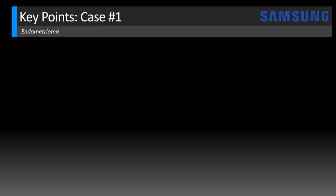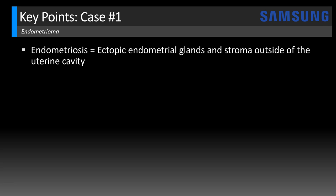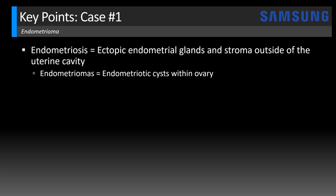Let's review key points for case number one. Endometriosis is the occurrence of ectopic endometrial glands and stroma outside of the uterine cavity — an abnormal location. Endometriomas represent endometriotic cysts confined to the ovary, but in the setting of endometriosis, extra-ovarian implants also occur, which can lead to adhesions and even obstruction. These implants most commonly occur in the pelvis but can rarely occur in the abdomen and very uncommonly even in the chest.